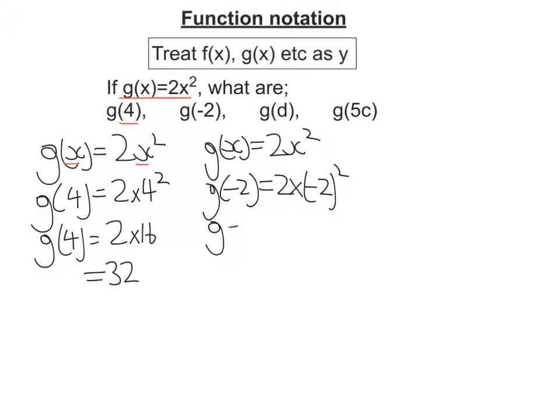Again, I must do my powers before I do my multiplying. So negative 2 times negative 2 is positive 4. Remember when you square it, it's always positive. So g(-2) is 8.